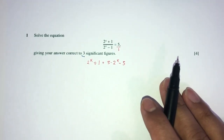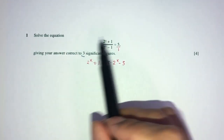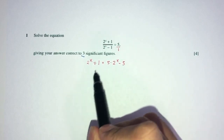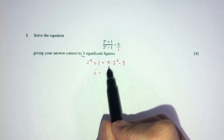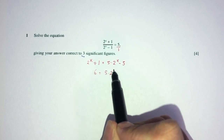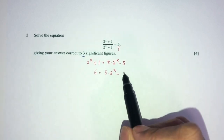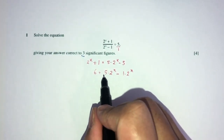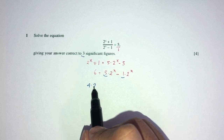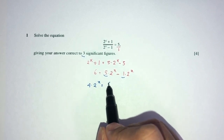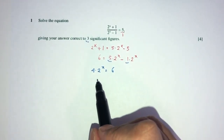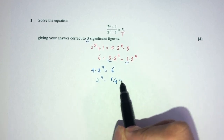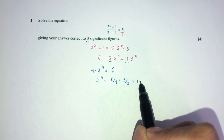Now, what else can we do? We can send this over here and this over here. You will have 1 plus 5, which will be 6. And 5 times this one minus 1 times this one. So 5 minus 1 is just 4. So you have 4 equal to 6. So finally, we will have 2 to the power x equals 6 over 4, which is simply 3 over 2, or 1.5 if you want.